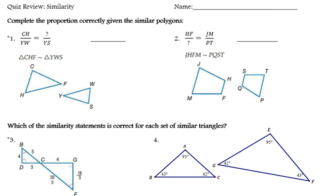Okay, number one, we want to complete the proportion correctly given the similar polygons. The proportion is set up based off of the similarity statement. They set CH, first two letters, over YW, first two letters, and we just need to figure out which side corresponds to YS. Well, YS is the first and last letter of our similarity statement, so it corresponds to CF.